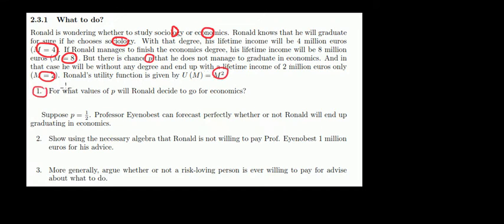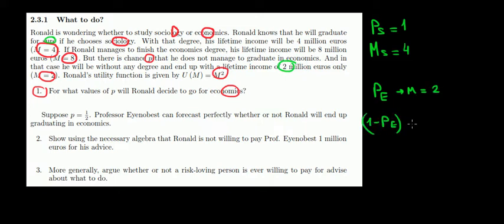Question 1: for what probability will we go for economics? Let's write this data in a better way. The probability of graduating from sociology is 100%, so that probability is 1, and our income from that degree is 4. Then we have a probability p from economics of not graduating, in which case our income would be just 2. And if we do graduate, that's the remaining probability, our income is 8 million.